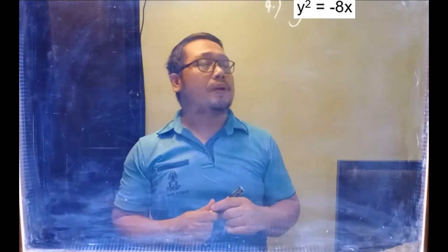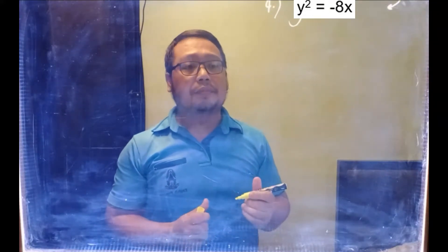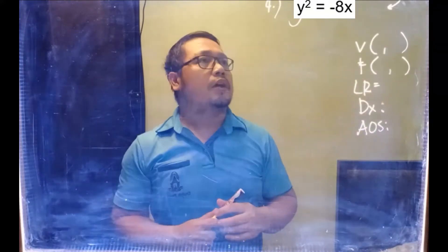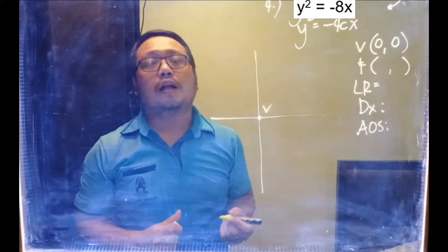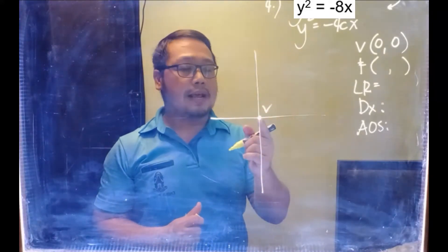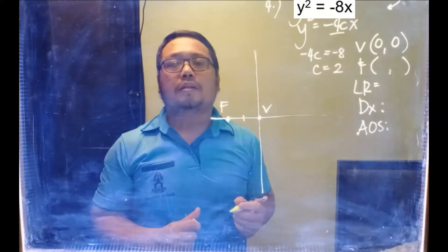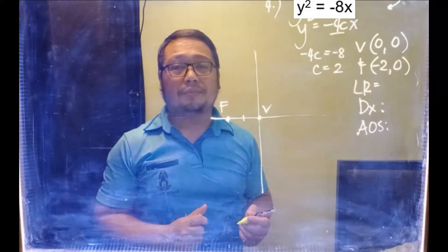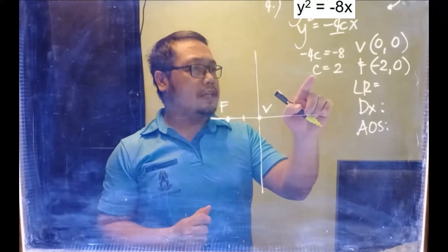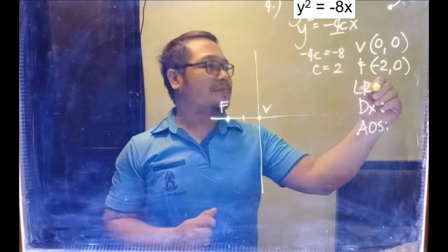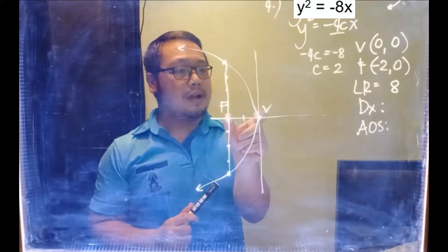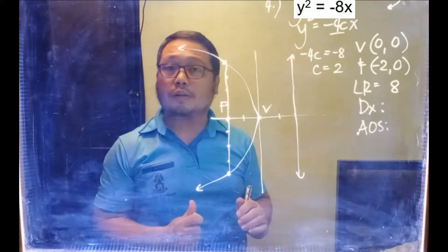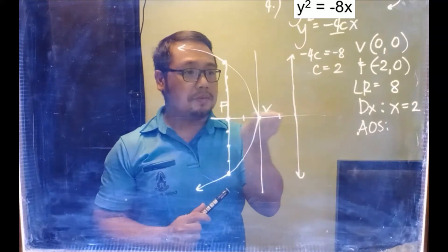Let's try example number 4. This is a parabola that opens to the left, so we graph the parabola and determine the following. Knowing that this parabola is in standard form, the vertex is at (0,0). To find the focus, it is C units away from the vertex, so we equate and get the focus at (−2, 0). The latus rectum is 4C; if C equals 2, then 4C equals 8. The directrix is opposite the latus rectum and C units away from the vertex, so its equation is X equals 2. Finally, the axis of symmetry is the X-axis, or Y equals 0.